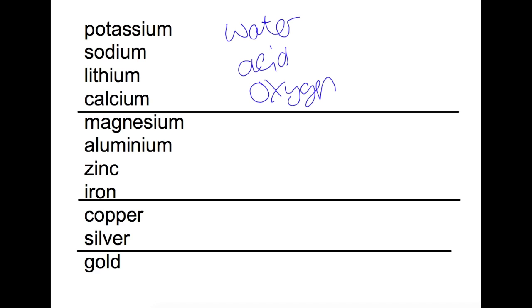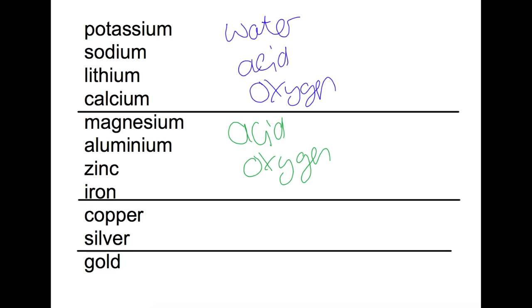The next set of metals — magnesium, aluminium, zinc and iron — do not react with water but they will still react with acid and oxygen. The next set of metals, where there's only two, is copper and silver. They don't react with acid but they will react with oxygen over time. And then finally gold, which shows no reactivity.